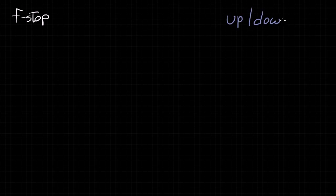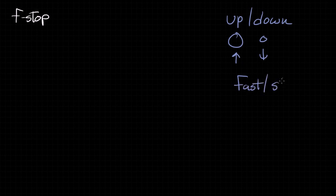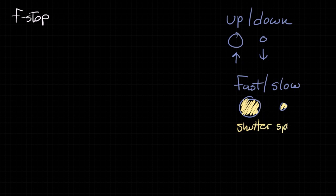Some last bits of information about f-stop. If someone says they're going up a stop or down a stop, that just means they're going to a larger or smaller aperture size. Going up a stop means doubling the amount of light; going down a stop means halving it. If someone says they have a fast lens or a slow lens, that refers to the size of aperture that lens can achieve. A fast lens can have a wide open aperture, letting in a lot of light. A slow lens will only achieve a much smaller aperture. On a fast lens, your shutter speed can be fast because you're letting in a lot of light at once and don't need it open as long.